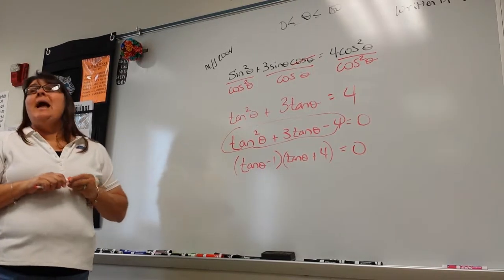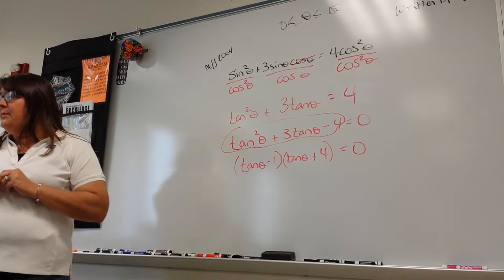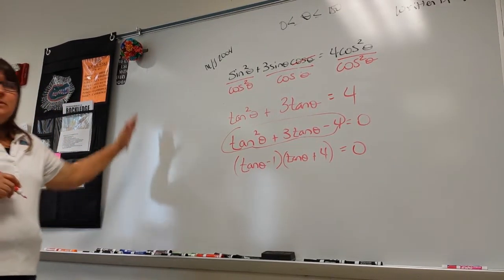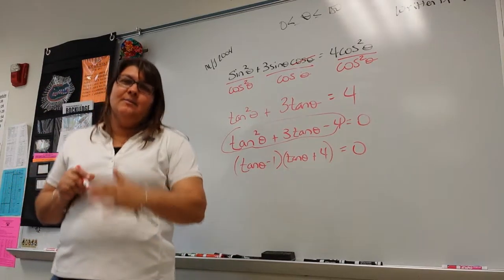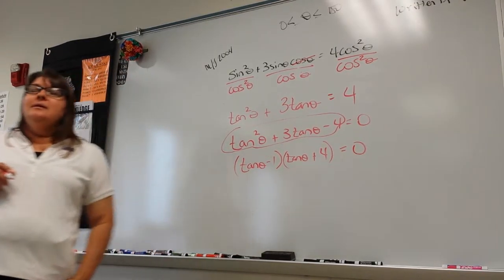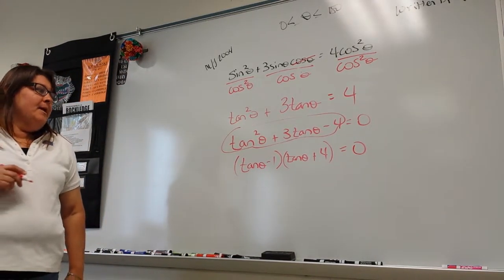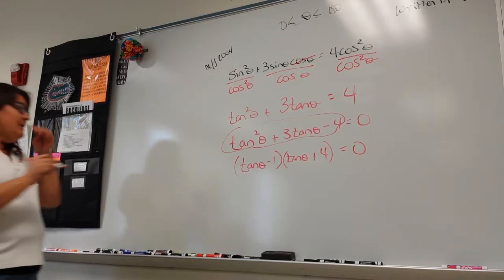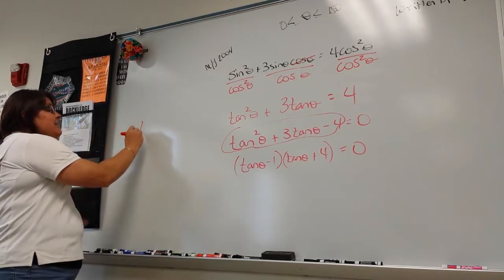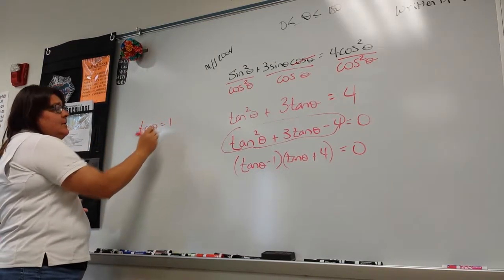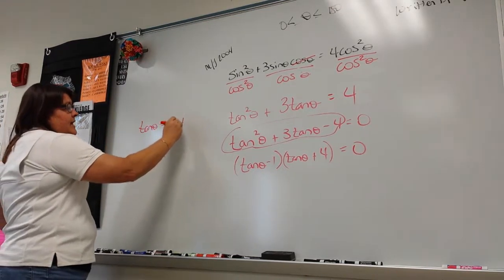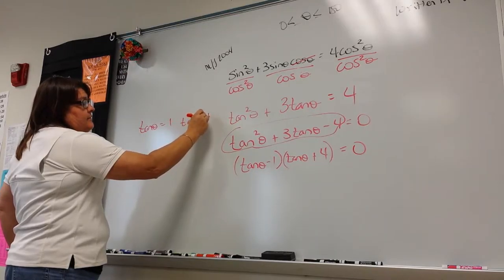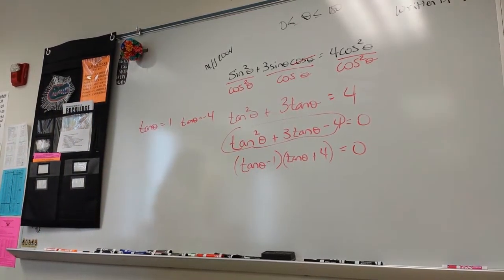Part two says now solve between zero and 180. To me it just naturally flows into the next piece. I'm going to take both pieces, set equal to zero, and solve for the word tangent.